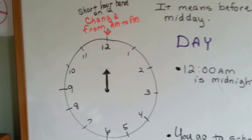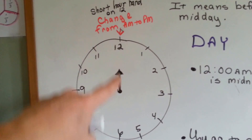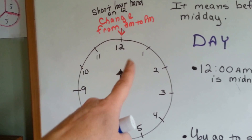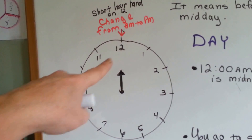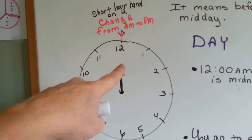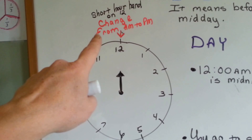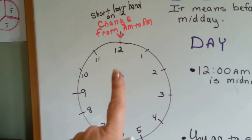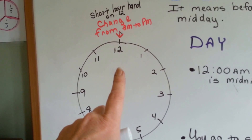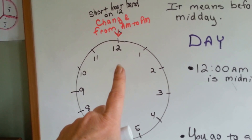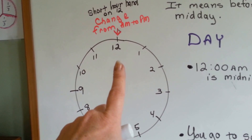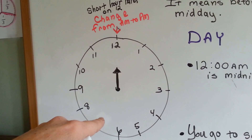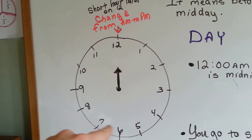So let's take a look at this clock. When the hour hand goes all the way around and comes back to the 12, it changes from AM to PM. The first thing in the day, at 12:01 AM, it goes all the way around. You wake up and go to school — this is all the time you're sleeping.